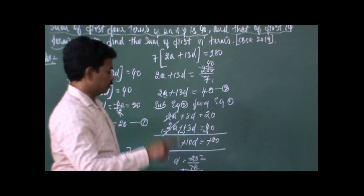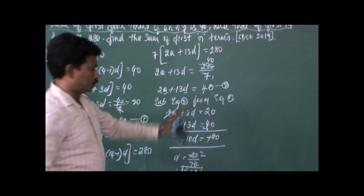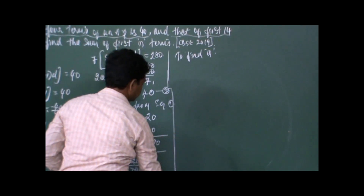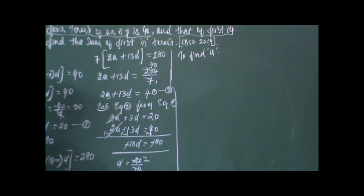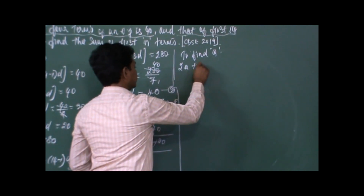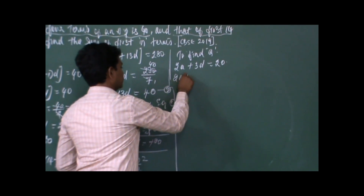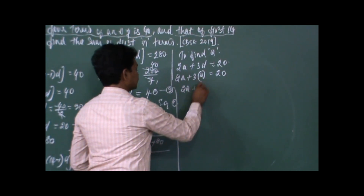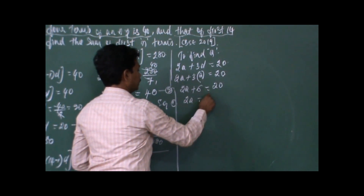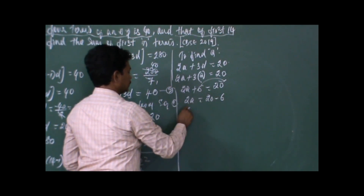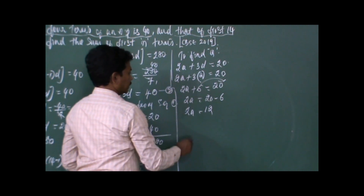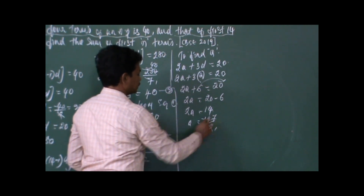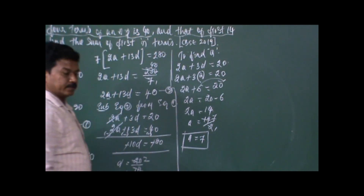To find A, substitute D = 2 into equation 1: 2A + 3(2) = 20, so 2A + 6 = 20, giving 2A = 14, therefore A = 7. So we have A = 7 and D = 2.